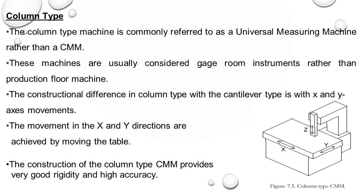The weakness of the bridge design is that it is difficult to place work onto the table because of obstruction from the machine structure over which the component must be placed. However, bridge construction provides better accuracy, and it is the most popular type of CMM construction because everybody gives importance to accuracy. Column type: in column type, X and Y movement is on the table only — these machines are usually considered gauge room instruments rather than production floor instruments.